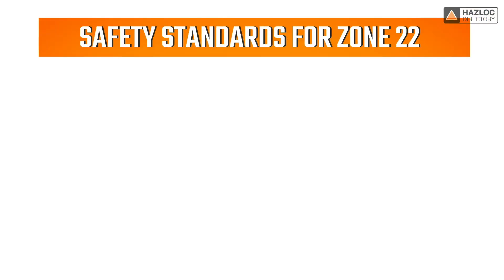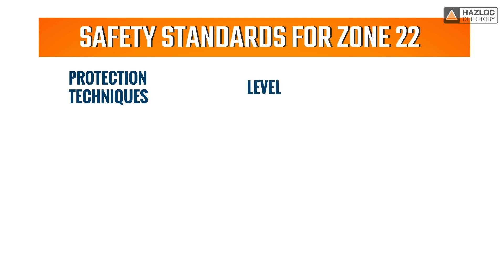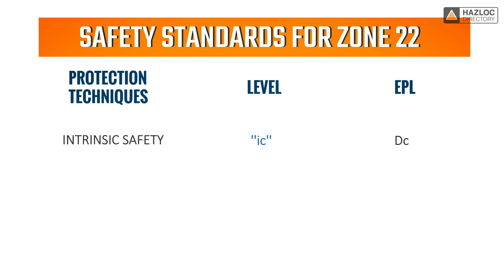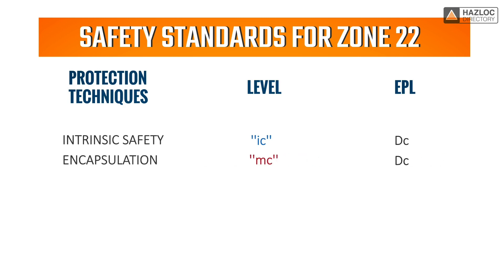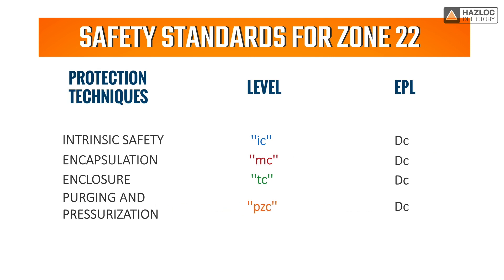In order to be certified as compliant with safety standards for Zone 22, an electrical device must be protected by one or more of the following protection techniques: intrinsic safety with level of protection IC, encapsulation with MC protection, protection by enclosure with TC protection, and purging and pressurization with PZC.